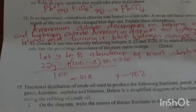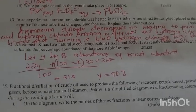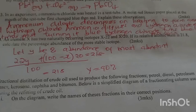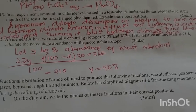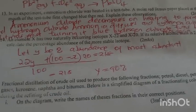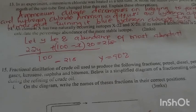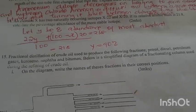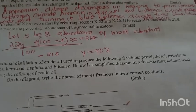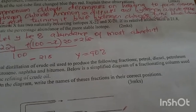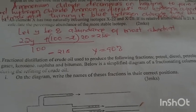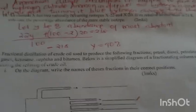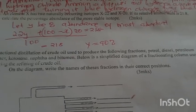In an experiment, ammonium chloride was heated in a test tube and wet red litmus paper placed at the mouth of the test tube first changed blue, then red. Explain. Ammonium chloride decomposes on heating to form ammonia gas and hydrogen chloride. Ammonia diffuses and turns the red litmus paper blue, and then hydrogen chloride later turns the blue litmus red.